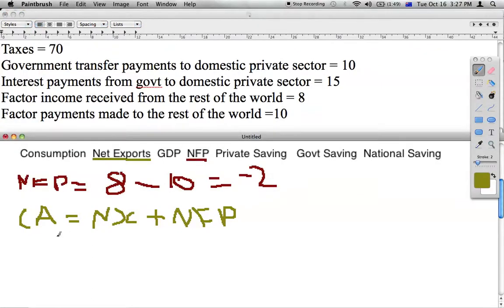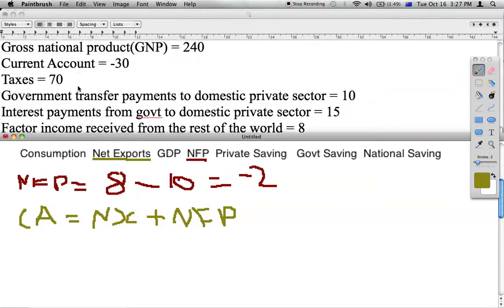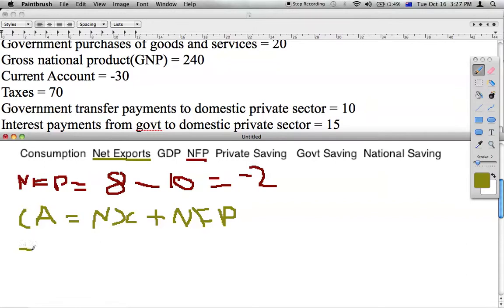So we can then fill in the numbers. We've been given current account balance as minus 30, which equals net exports plus what we just figured out is net factor payments. So put this in brackets as minus 2. We can then solve for net exports by putting the minus 2 on this side, and we will get minus 30 plus 2, which equals minus 28.